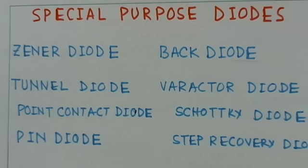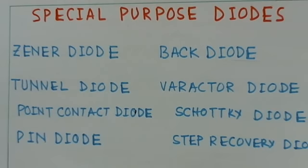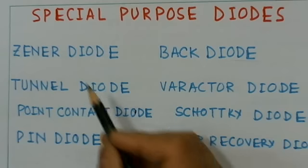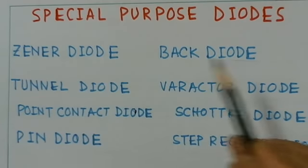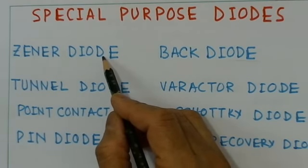Before discussing these types of diodes, two important phenomena are equally important: the Zener breakdown and the avalanche breakdown. We will start with Zener and avalanche breakdown and then talk about the eight types of diodes.